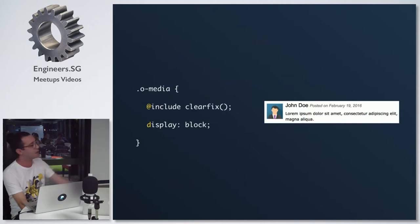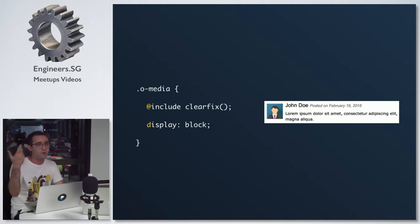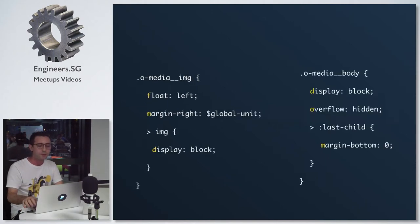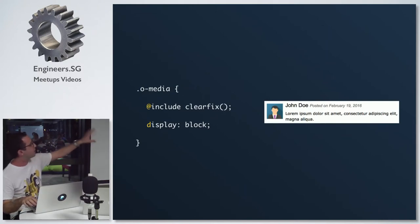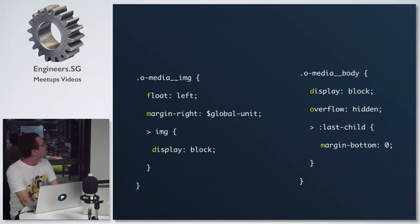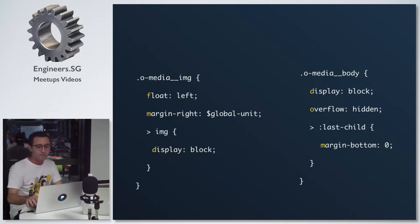An example: this is what we call a media object — a very standard object used in most blocks online. We declare it as 'o-media', referred to as an object. Using Sass, we include a clearfix mixin and display block. We then declare the elements within this object: an image and a body. The image gets float left, margin right, and display block. The o-media body gets display block, overflow hidden, and so on.